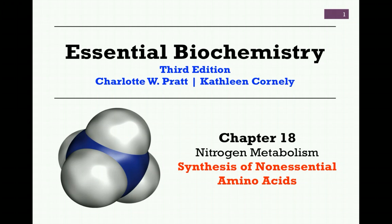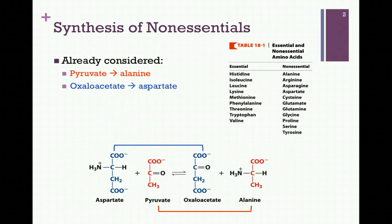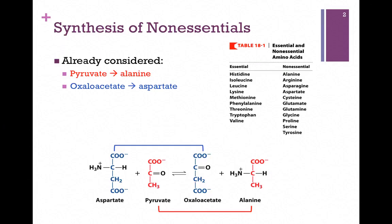We're continuing our studies of nitrogen metabolism from Chapter 18, and our subject in this lesson is the synthesis of non-essential amino acids. Remember that these are amino acids that we can synthesize if we don't include them in our diet. The primary way in which these non-essentials are synthesized is some kind of transamination reaction, which we've looked at already in lecture, and it's illustrated at the bottom of the screen here.